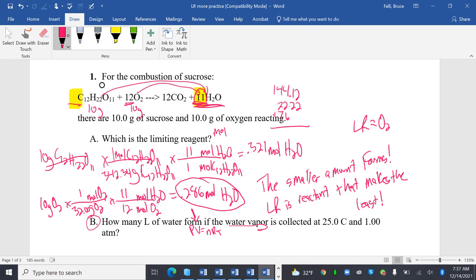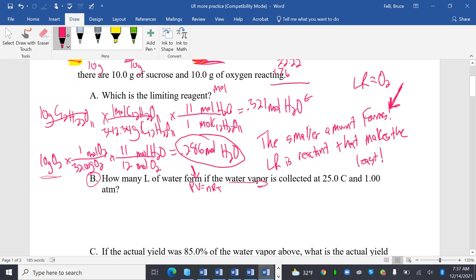Okay. So which one's smaller? The smaller amount forms. So that means 0.286 moles of H2O. That doesn't answer the question. The limiting reactant is the reactant that makes the least. Okay. So my limiting reactant is O2.